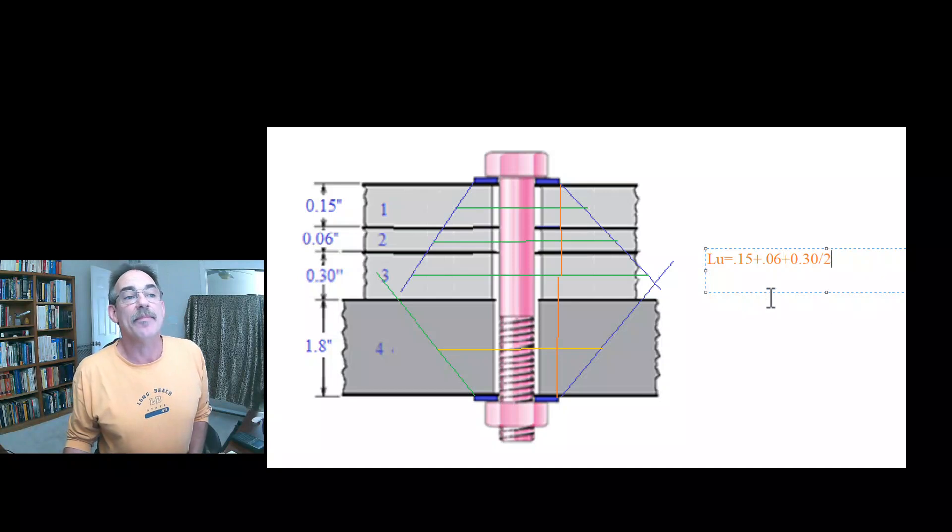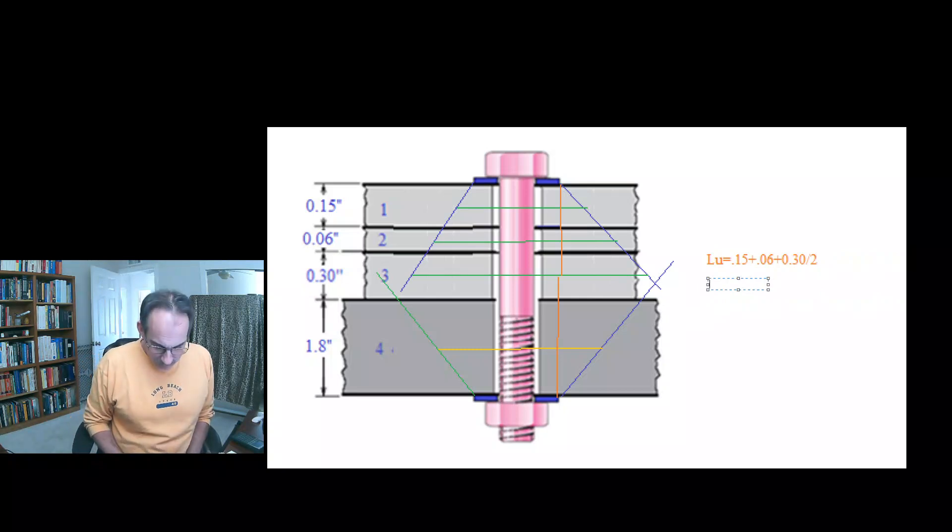The depth coming from the lower cone angle is going to be the bottom plate thickness, 1.8, plus the third plate, which is 0.3 over 2.